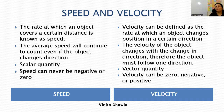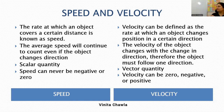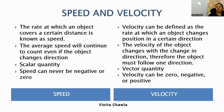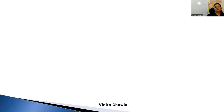If an object is moving with a speed of 20 meters per second towards the east direction, then what will be the velocity of the object towards the west? It is minus 20 meters per second.